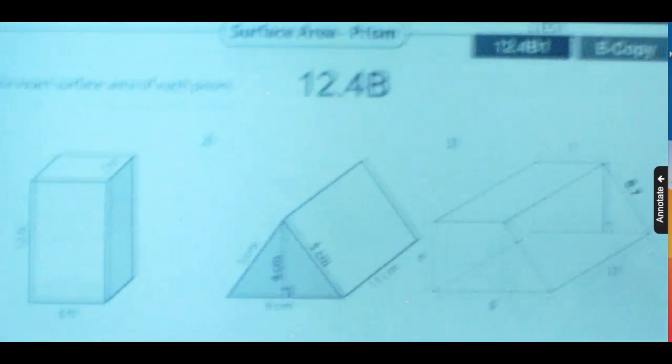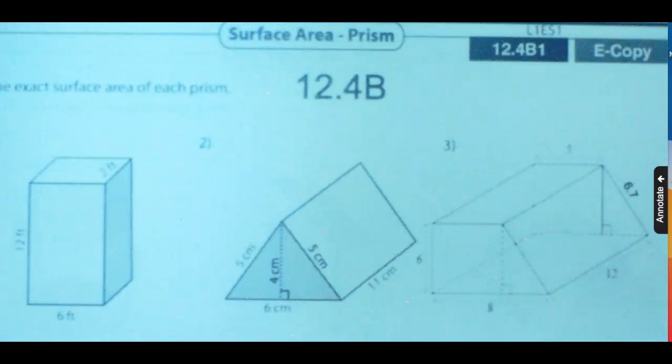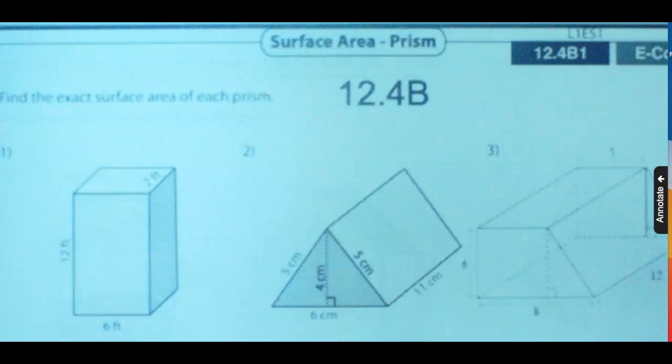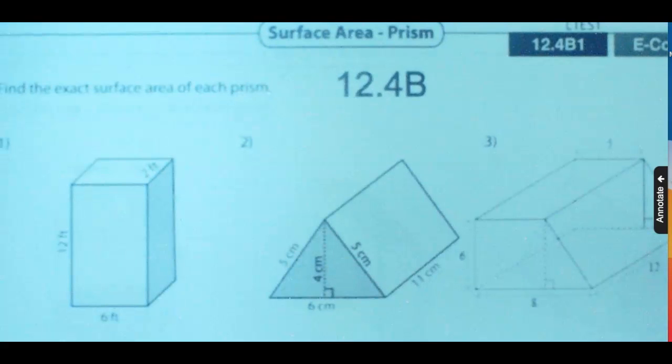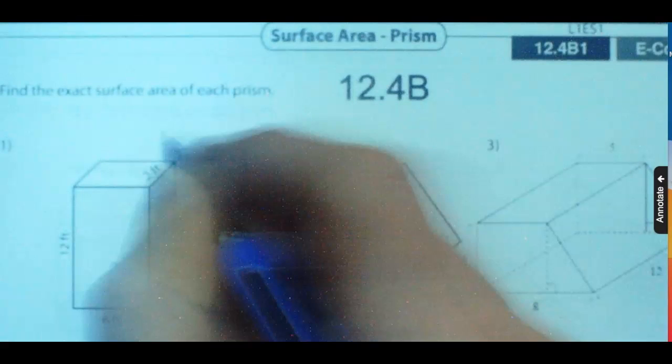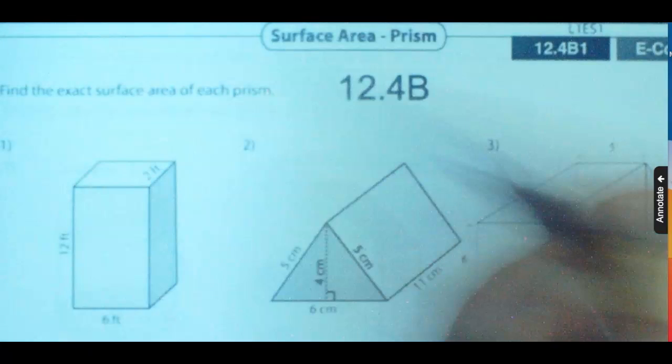Hello, this is a tutorial on 12.4B1. This is going to be finding the surface area of prisms. This first one here is a rectangular prism, and you can watch 12.4A1 and 2. That will deal specifically with how to do this. I'll just do a quick review.